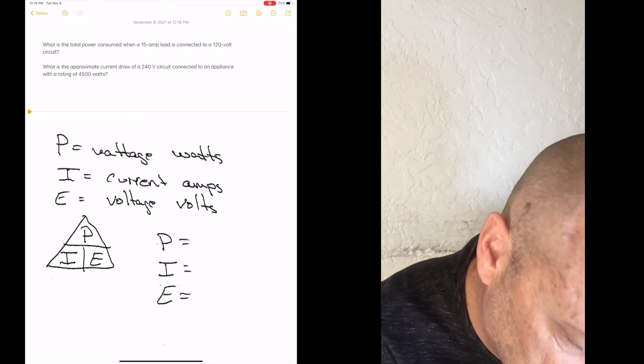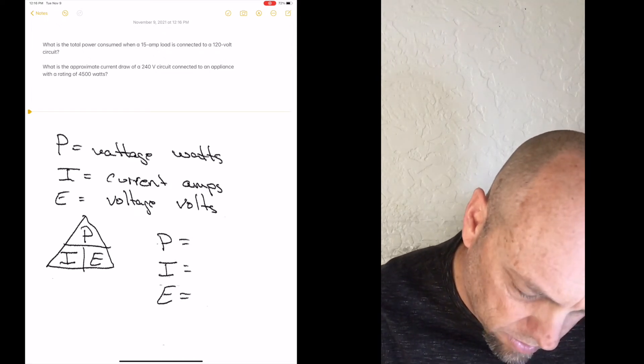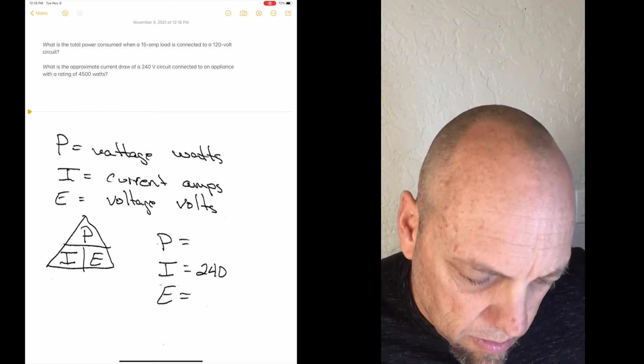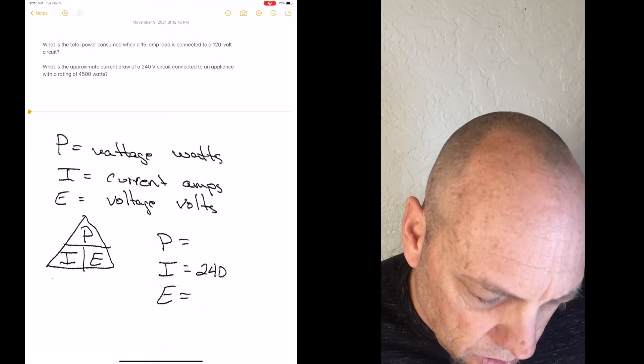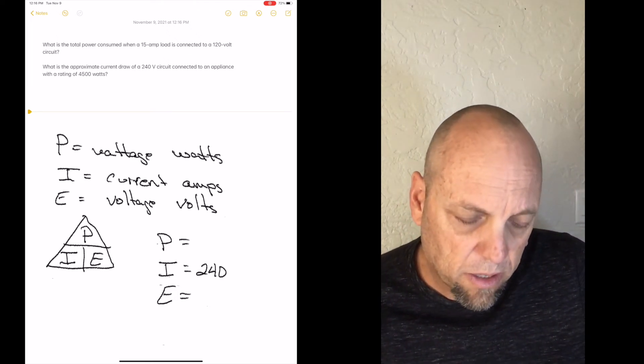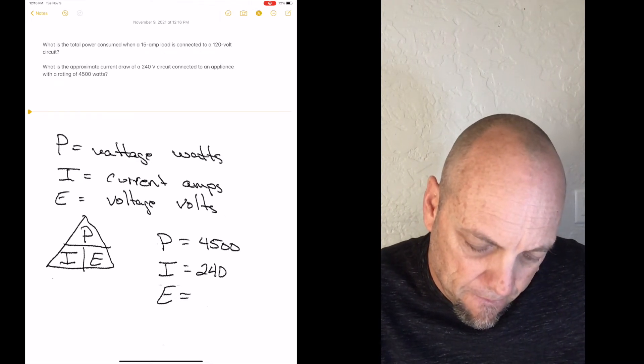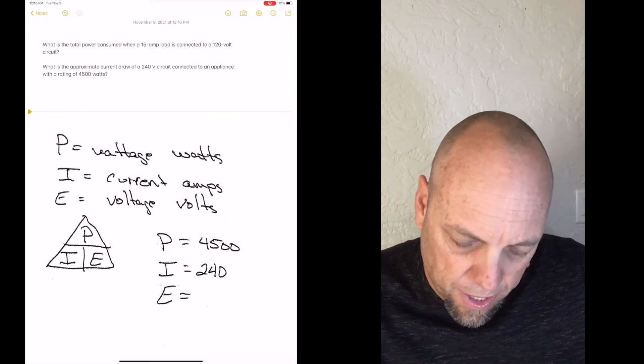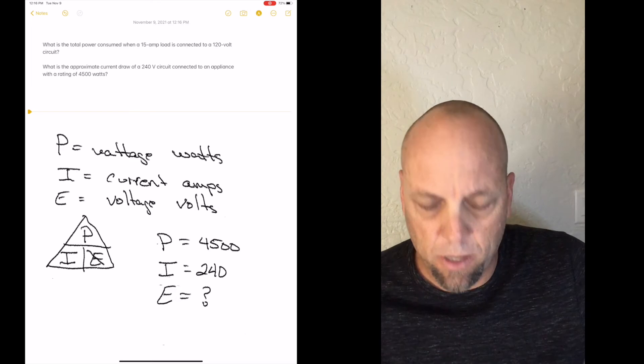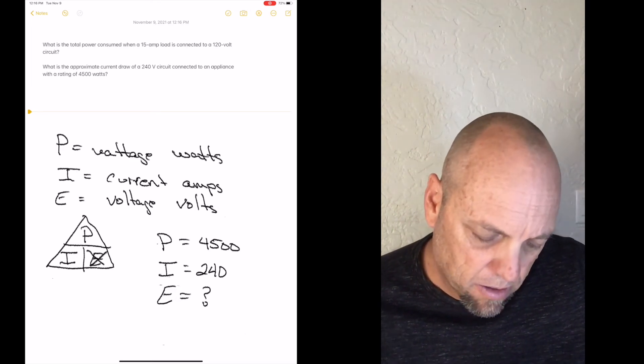So let's see. We know approximate current draw, which is I, is 240 volts. And it's connected to an appliance with a rating of 4500 watts. So we know wattage is P. So we're looking for E. So with simple math, we come over here. We know we're looking for E. So we'll just cross out E on our triangle.